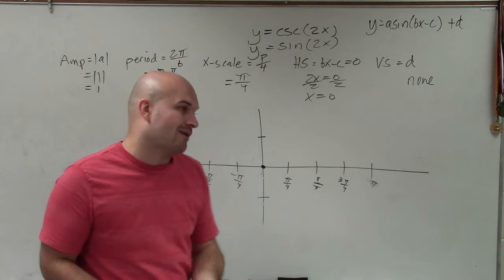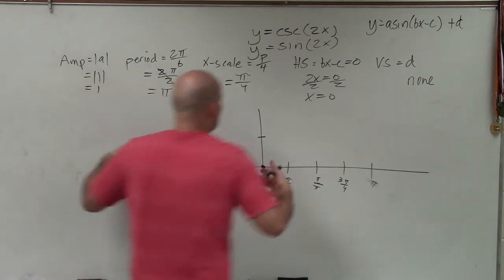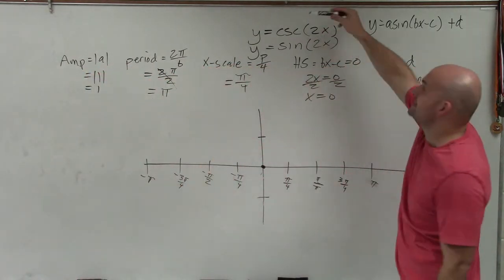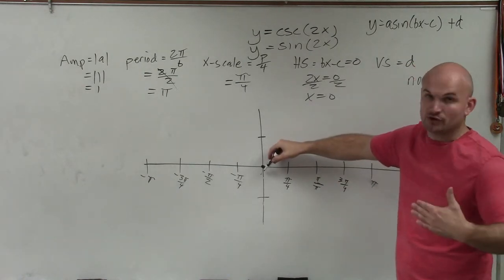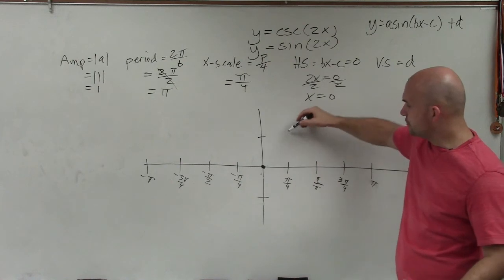So now we need to know exactly what the graph of sine looks like. Remember, we're graphing sine, but we're only doing sine just to get to cosecant. So remember, sine intersects at the origin, the parent graph intersects at the origin and then goes up to its maximum.